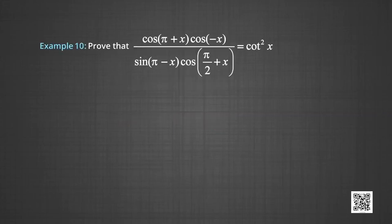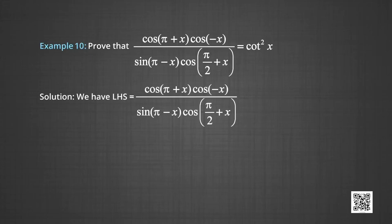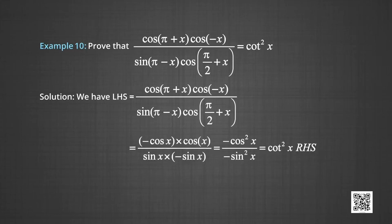In example 10, we prove that [cos(π + x) · cos(−x)] / [sin(π − x) · cos(π/2 + x)] = cot²x. The left-hand side equals (−cos x)(cos x) / [(sin x)(−sin x)] = −cos²x / (−sin²x) = cos²x / sin²x = cot²x, which equals the right-hand side.